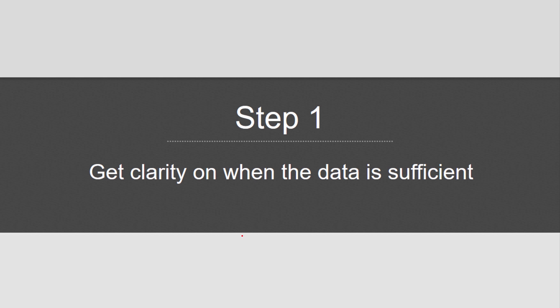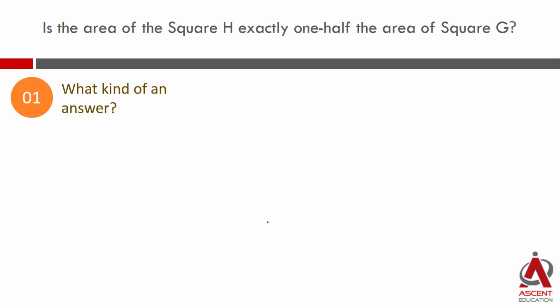We will have a look at what we need to get clarity on. What kind of an answer will this question get? It is a yes question. Keep in mind the answer is going to be a yes or a no. When is the data sufficient? A definite yes or a definite no means the data is sufficient. Maybe means the data is not sufficient.